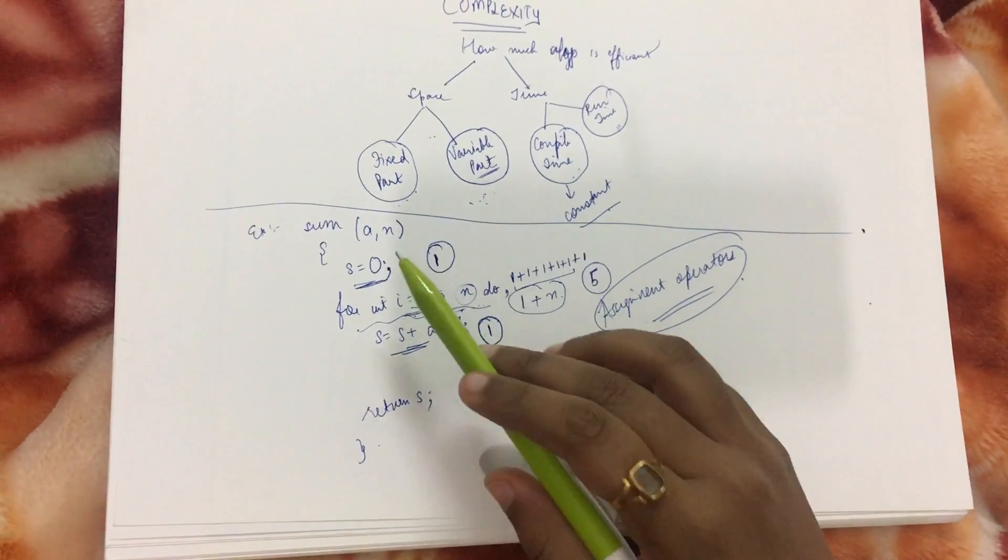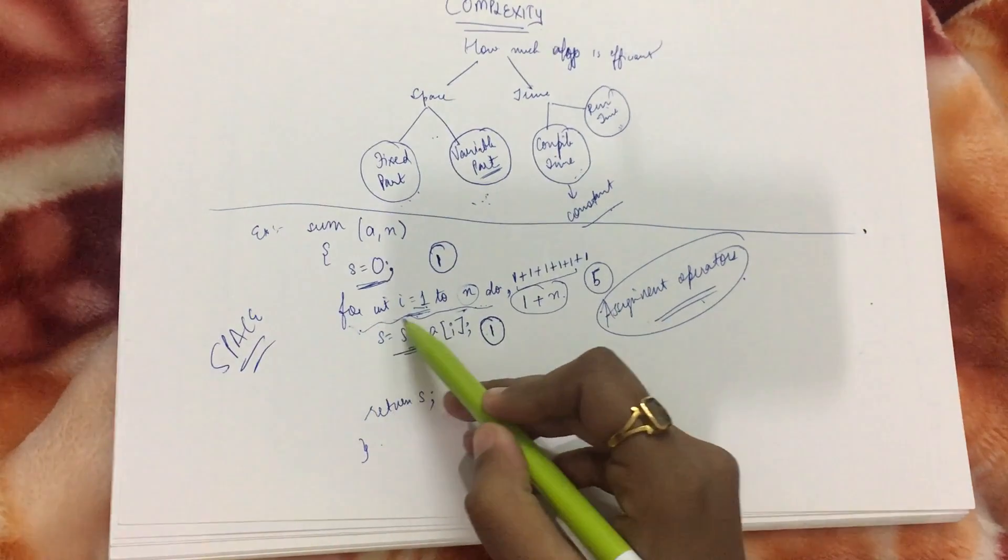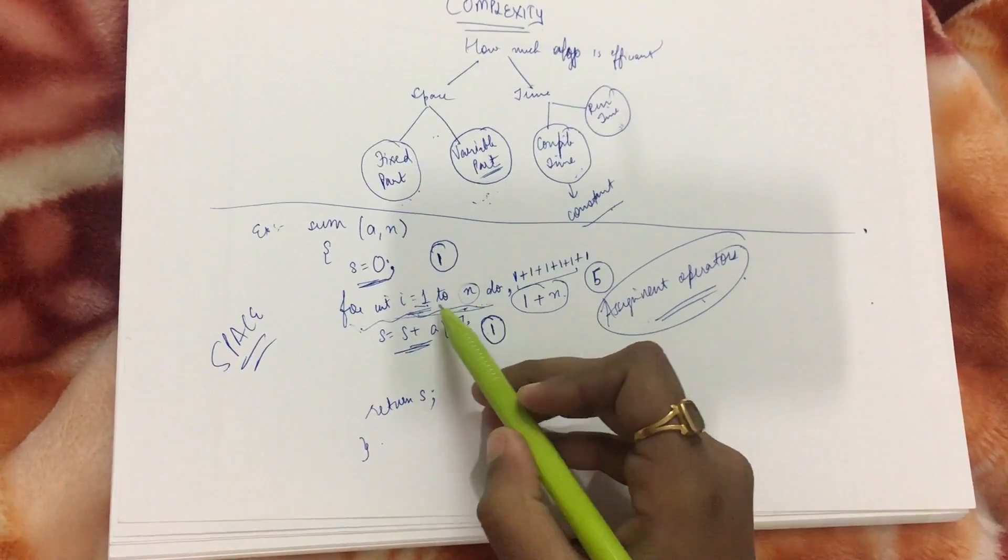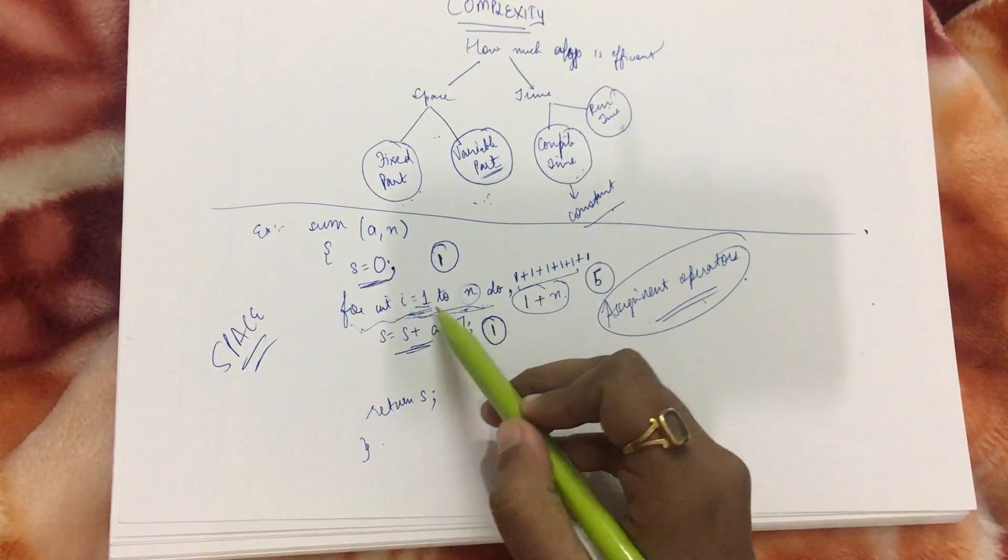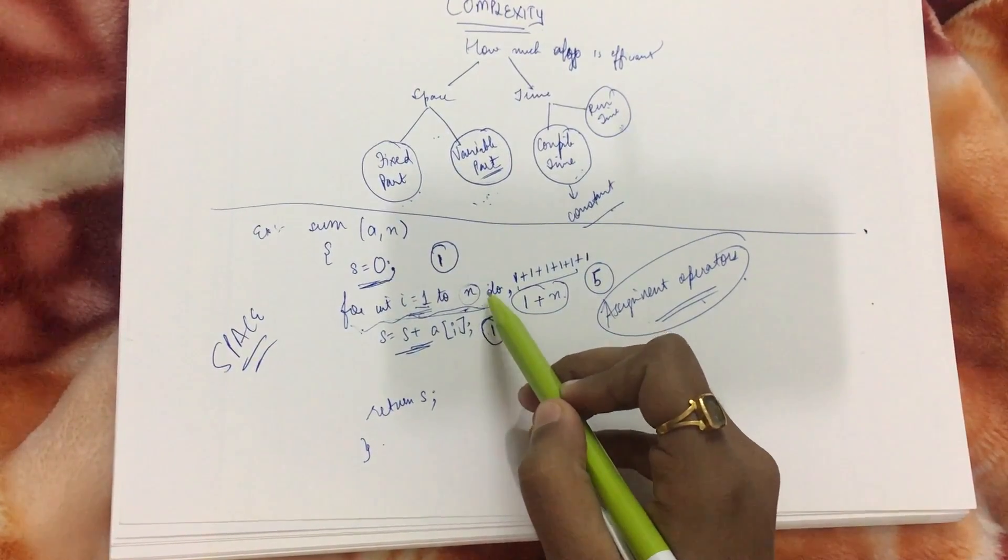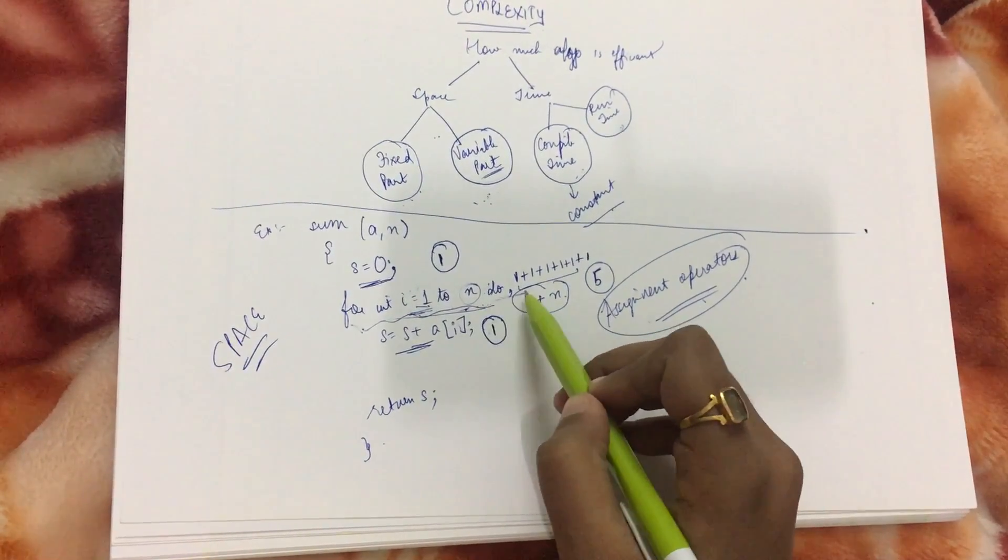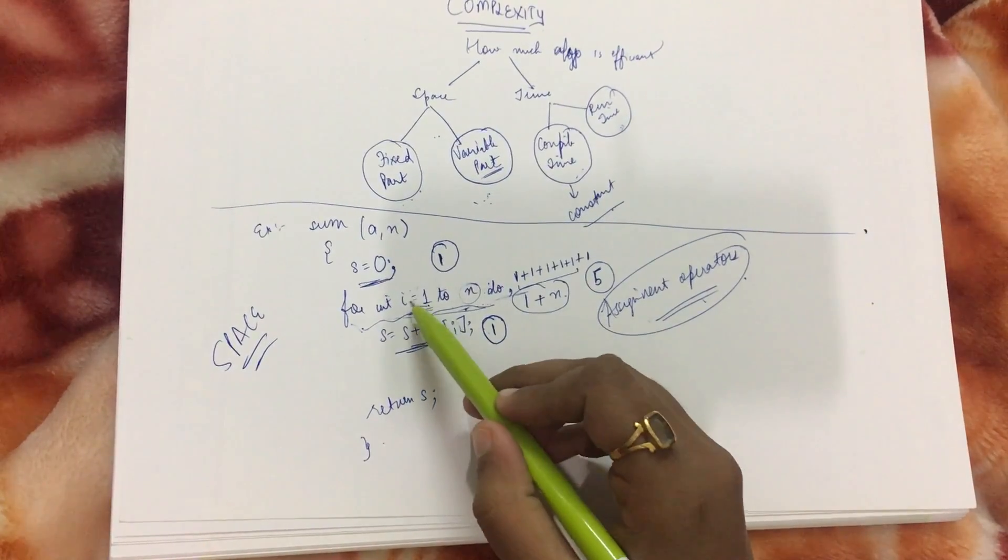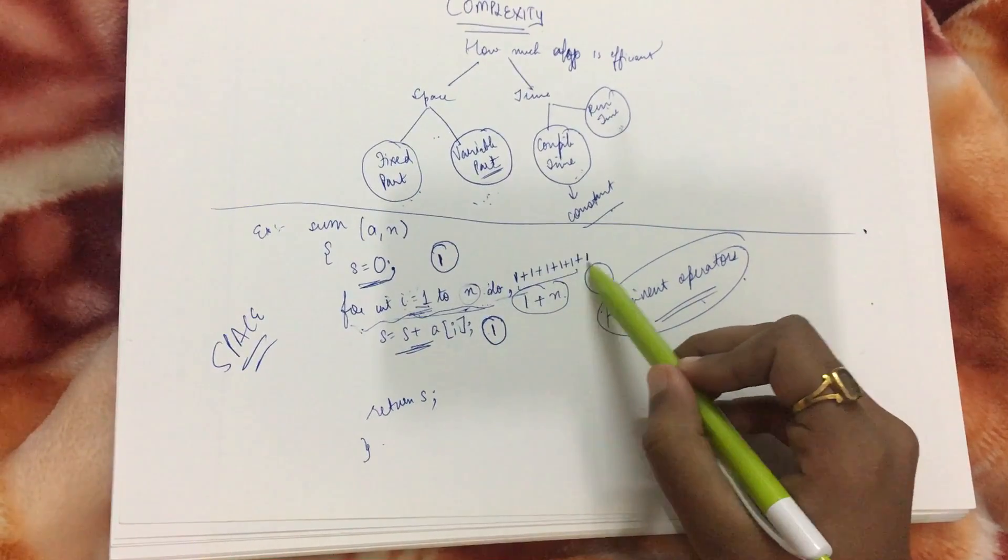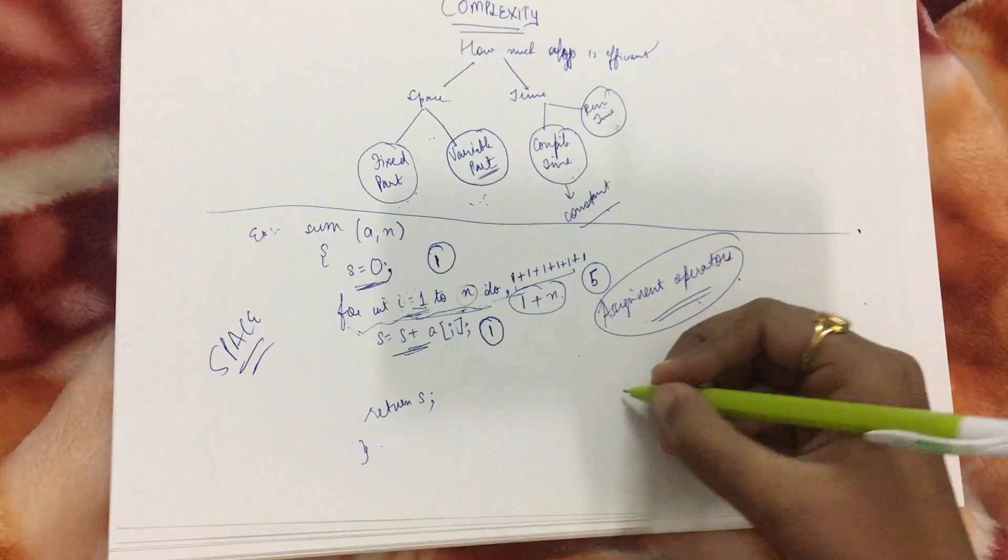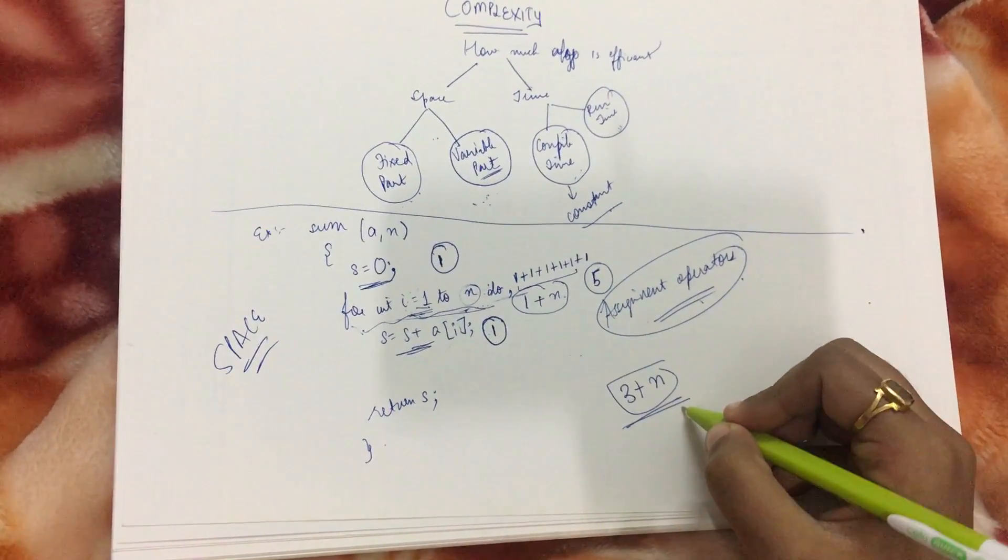I'm checking the space complexity for the assignment operator. When I talk about this for loop, from 1 to n times i is assigned and the loop works, but when i moves to n plus 1, i is assigned the value n plus 1. Although the condition turns false and the loop will not work, the assignment has taken place. That is why the space complexity is incremented by 1, so the complexity becomes 3 plus n. That is the space complexity.